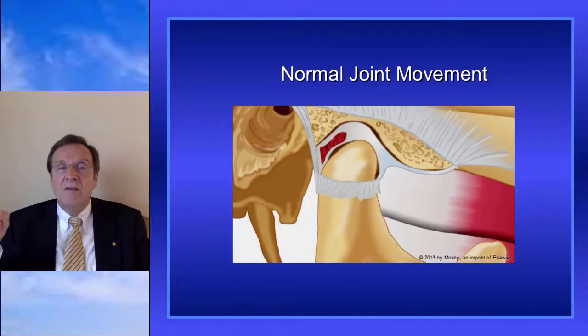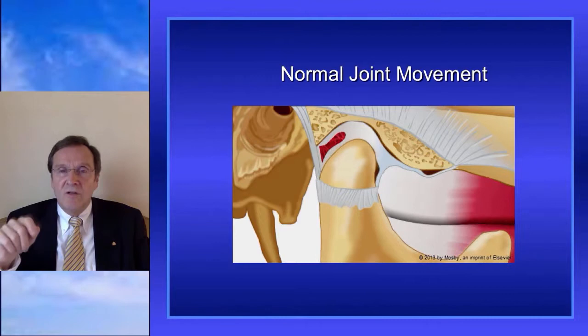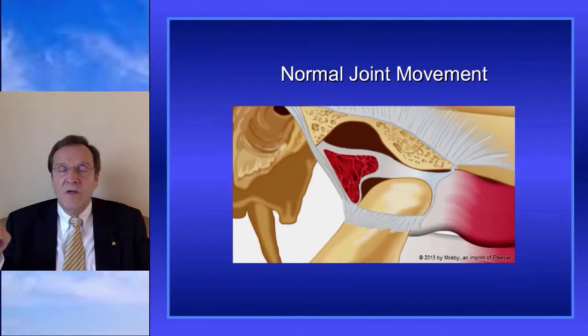The disc is rotating posteriorly on the condyle during opening, and if you look just at the inferior joint space, you'll see there's rotational movement occurring there. When the mouth is wide open, the inferior retrodiscal lamina stops it from moving further, and when it's closed, the inferior retrodiscal lamina stops it.